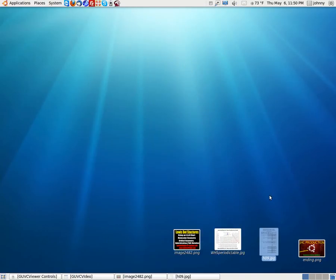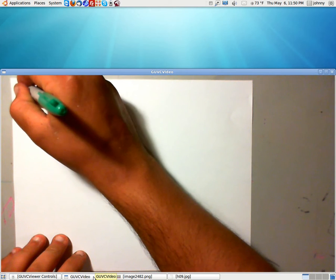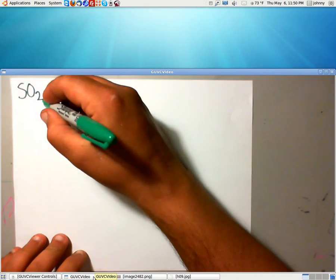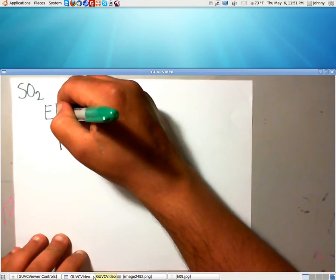The problem that we're going to be dealing with tonight is, let me turn my camera on, is going to be SO2, sulfur dioxide, SO2. Now, let's go ahead and create the E.A.N chart. E, A, and N.